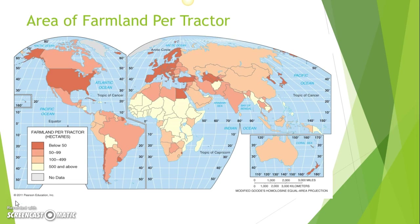This has been our quick review of commercial and subsistence agriculture. We went through five major ways to tell the difference between the two, and then looked at some maps to show how that plays out geographically. If you have any questions, please feel free to see me in class — I'd be delighted to answer them.